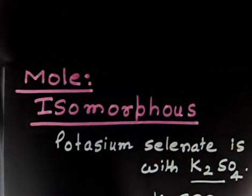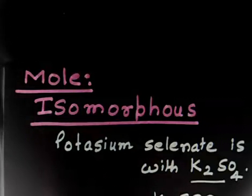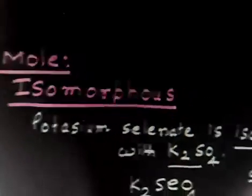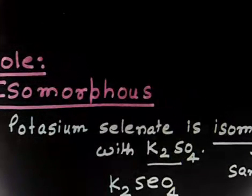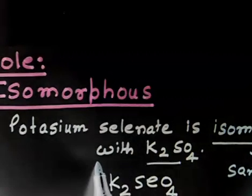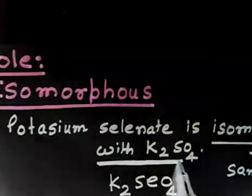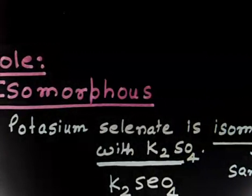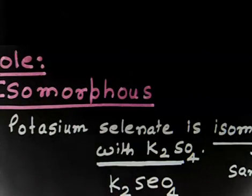This problem is related to the concept of isomorphism. The problem says potassium selenate is isomorphous with potassium sulphate. Potassium sulphate has a formula of K2SO4, and it is isomorphous with potassium selenate K2SeO4.